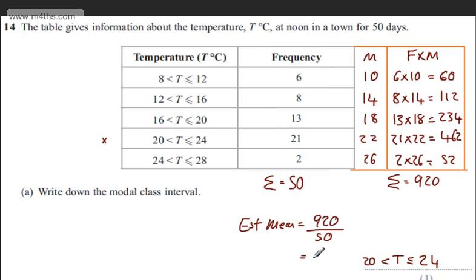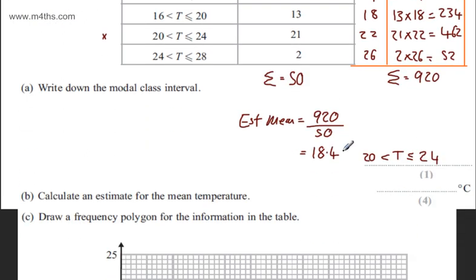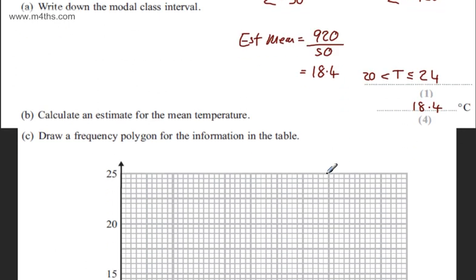So an estimate for the mean is going to be 920 divided by 50. Popping that in the calculator, dividing our answer by 50, that gives us 18.4. So 18.4 seems fairly logical. We've got the degrees here, so 18.4 degrees, and that's an estimate.